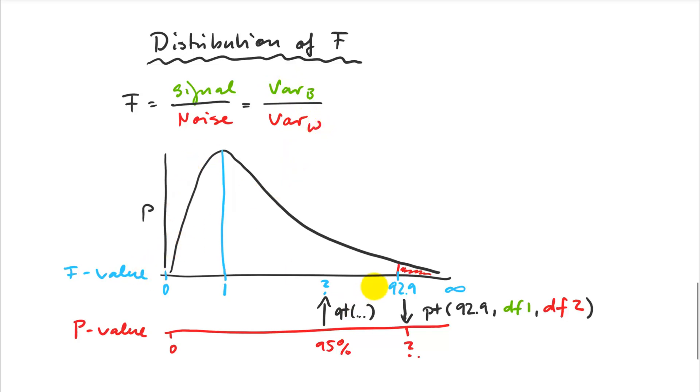So this is my distribution, and what I can do now if I'm asking, you know, could this difference that I observe here, could the signal to noise ratio just arise due to random chance, I can just integrate the area under the curve and I have my answer.